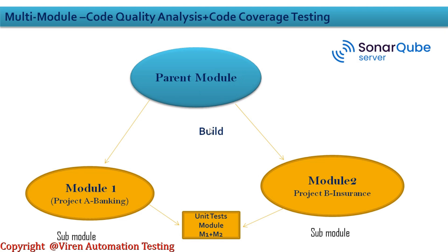When we build the parent module, the code coverage report should be generated under the unit test module, which will have the coverage report related to module one and module two. If you run module one independently you get only that module's code analysis and coverage report. I want to build the parent module and get the report for module one and module two — and potentially multiple modules — all at one place. This is the concept we are going to build.